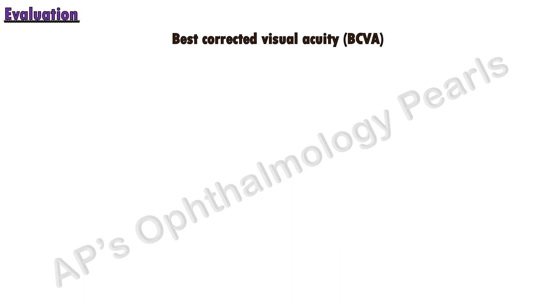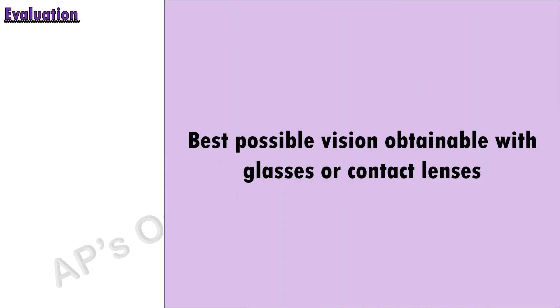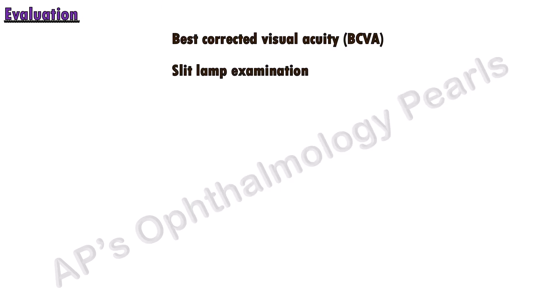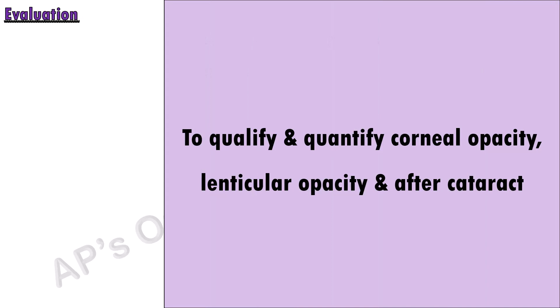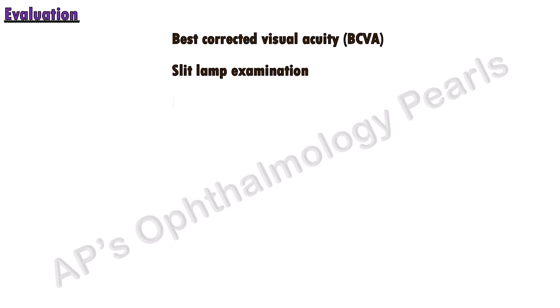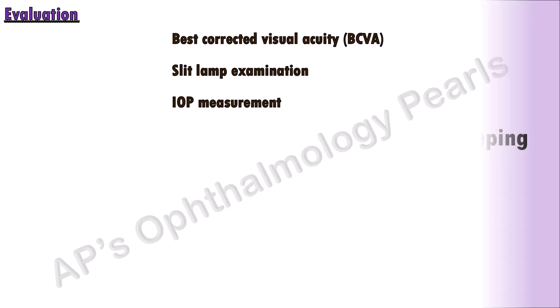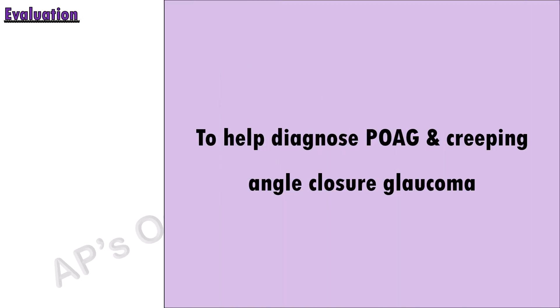To evaluate a patient who presents with gradual painless progressive diminution of vision, best corrected visual acuity should be determined — that is, the best possible vision obtainable with glasses or contact lenses. Slit lamp examination is performed to qualify and quantify corneal opacities, lenticular opacity, and after-cataract.